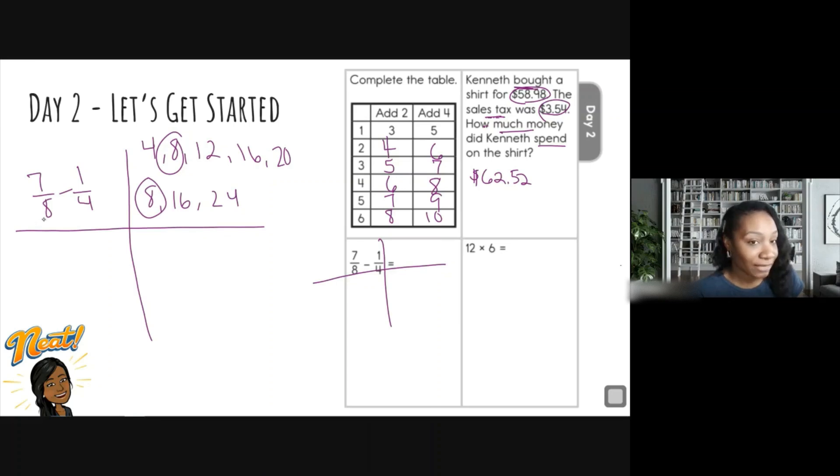So seven eighths already has an eight for your denominator. We do not need to change that. We are going to focus on changing or renaming one fourth. Okay. So let's do that. So I'm going to write my seven eighths here. And then I have my one fourth. So to rename it, I need to change that four to an eight. So what multiplied by four gives me eight? So four times two. I have to do the same to my numerator. And when I rename that fraction, I now have, because you multiply straight across, two times one is two and four times two is eight.